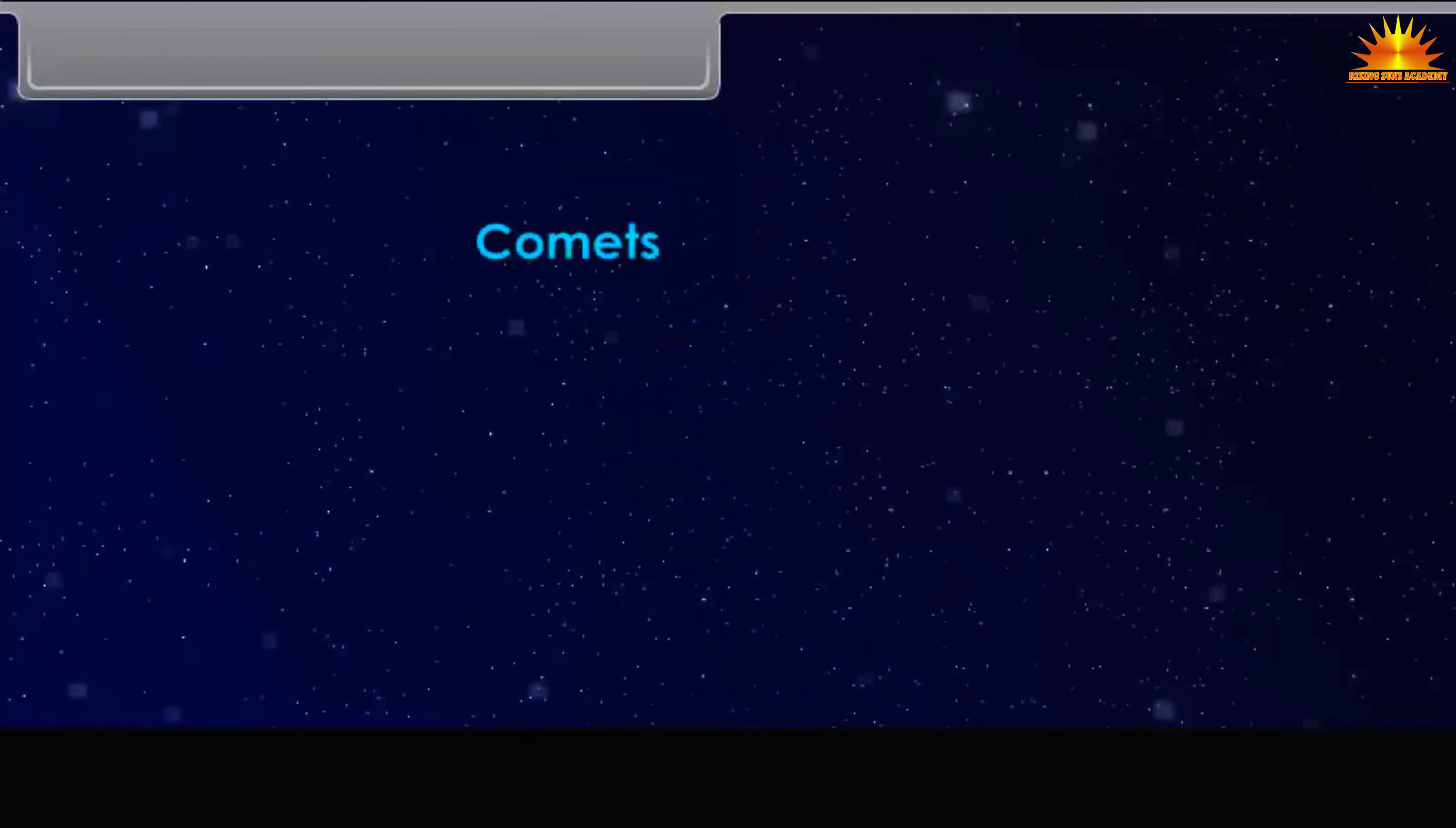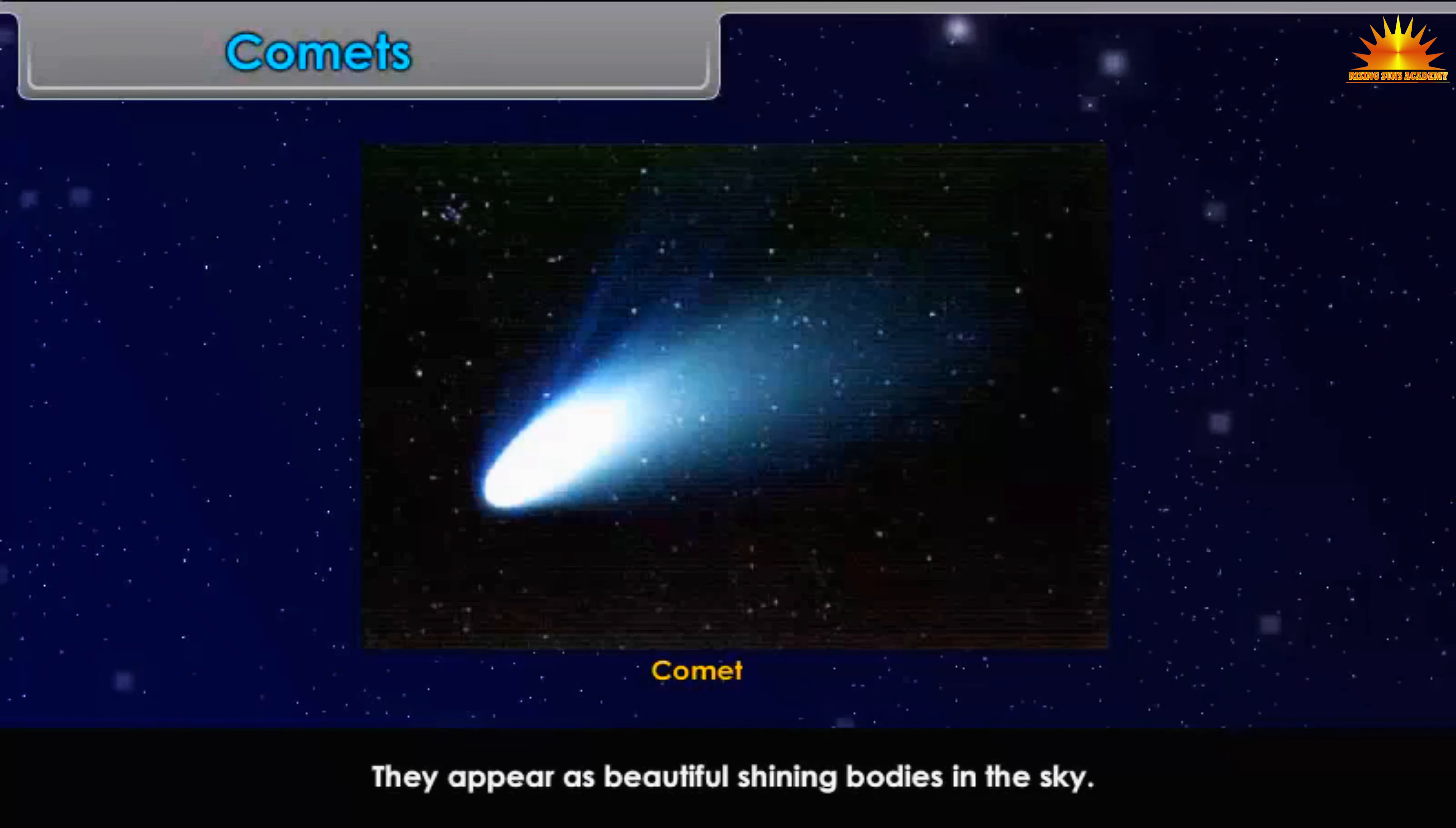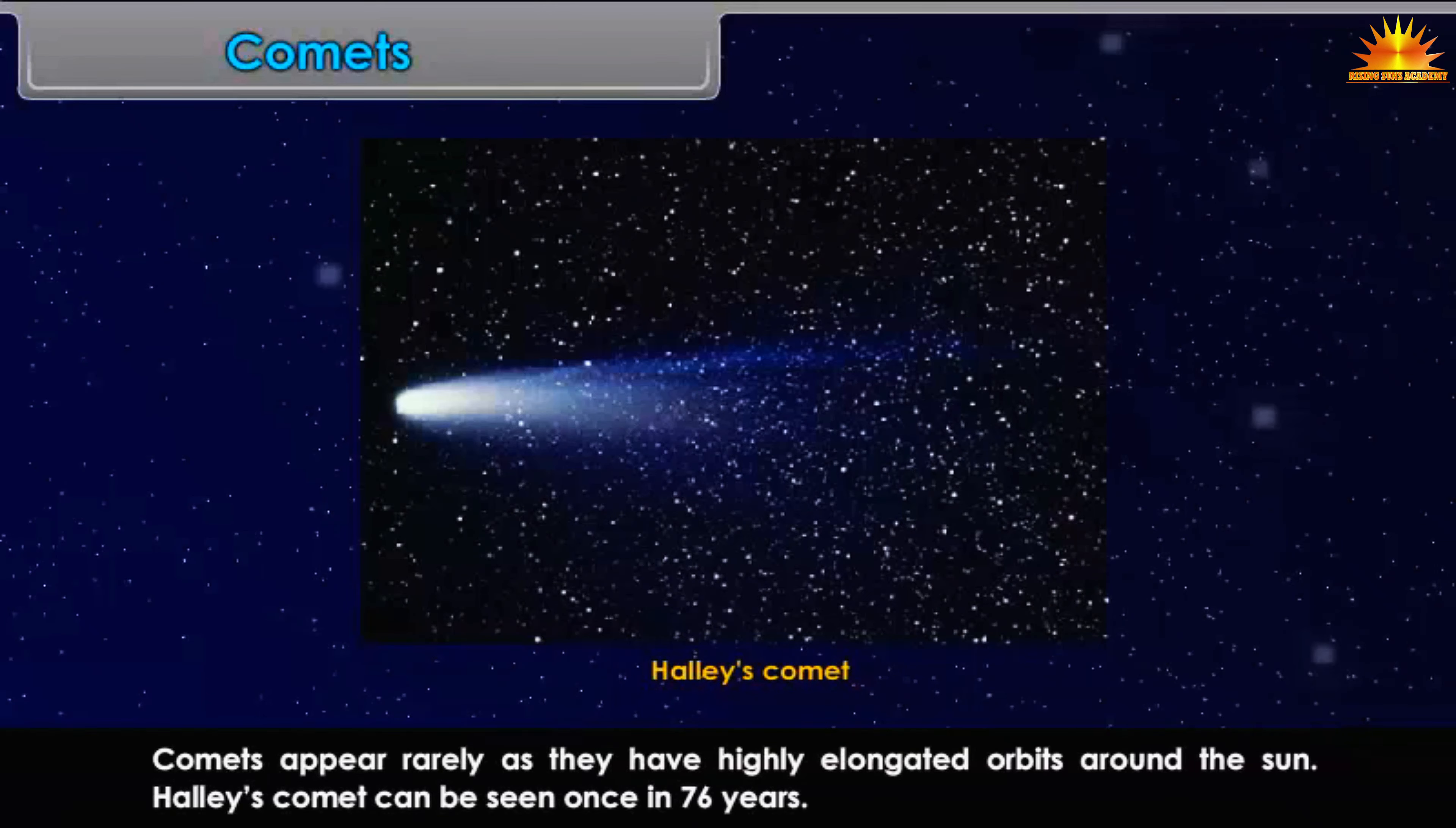Comets: These are heavenly bodies that revolve around the Sun. They have a head called coma and a long tail after them. They appear as beautiful shining bodies in the sky. Comets appear rarely as they have highly elongated orbits around the Sun. Halley's comet can be seen once in 76 years.